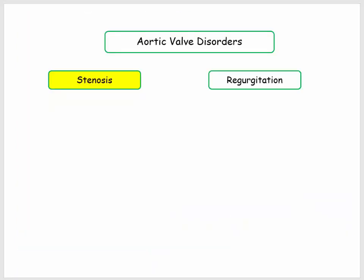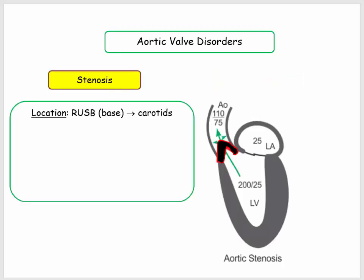Here are the aortic valve disorders: aortic stenosis, which is the focus of this video, and aortic regurgitation or insufficiency — the terms are used interchangeably. The location of aortic stenosis is described at the right upper sternal border, which is also referred to as the base. The murmur typically radiates to the carotids.